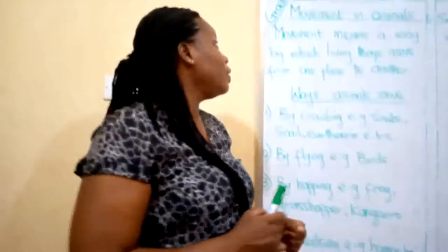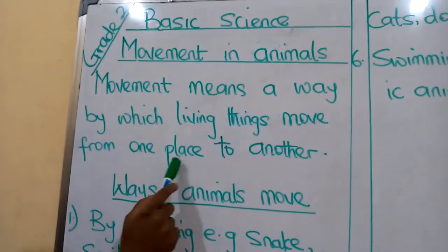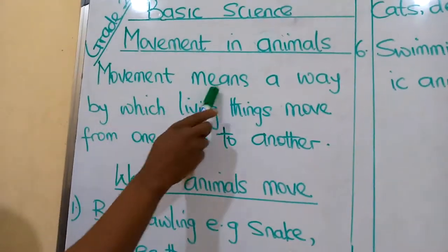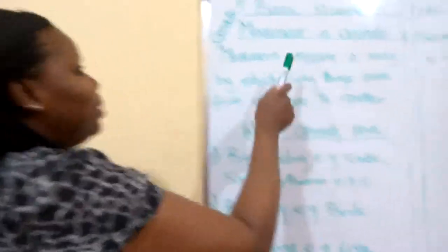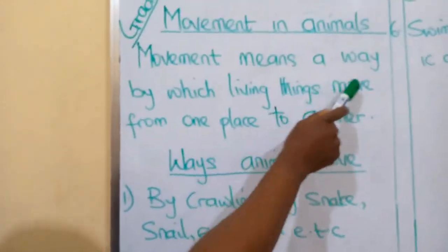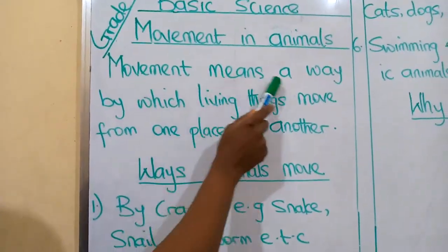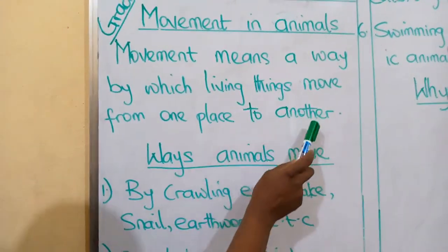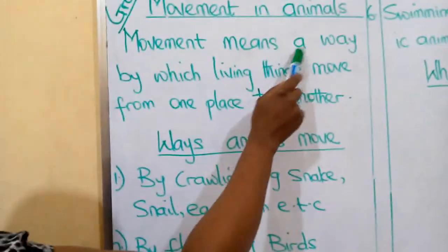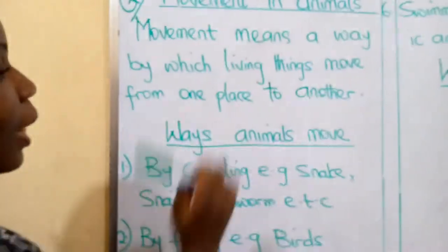Take this note down. Now, we want to define movement. Movement means a way by which living things move from one place to another. Let's say it together: movement means a way by which living things move from one place to another.